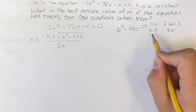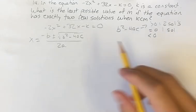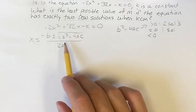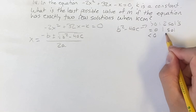And if it's less than 0, then you're going to be taking the square root of a negative number. The square root value is going to be imaginary, so there's going to be no real solutions.